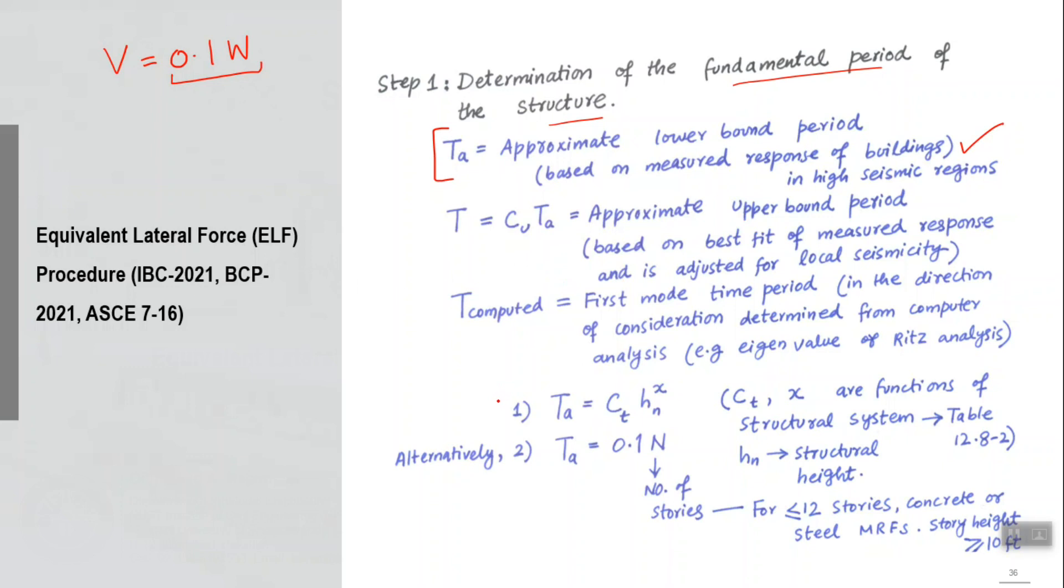For Ta, ASCE 7-16 provides three expressions. First is this one: ct factor times h raised to power x, where both ct and x are the functions of structural system. There is a table available where you can select your structural system and then get the ct and x value. These are empirical modifiers.